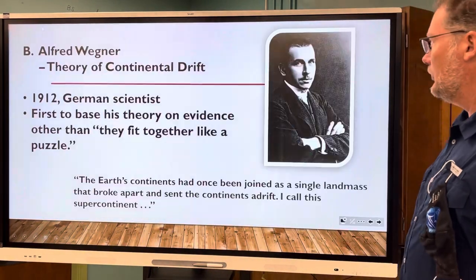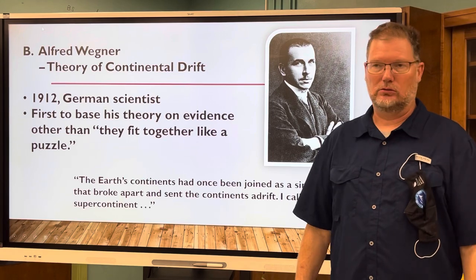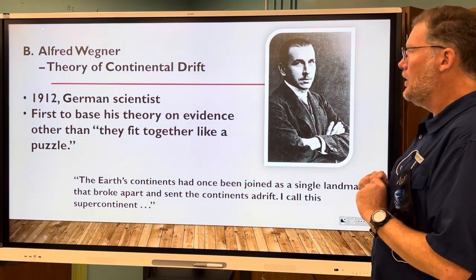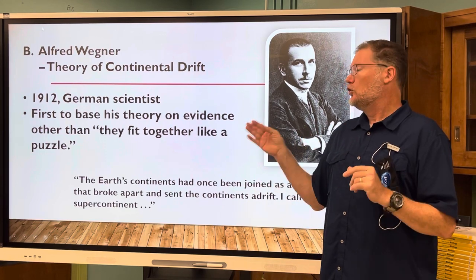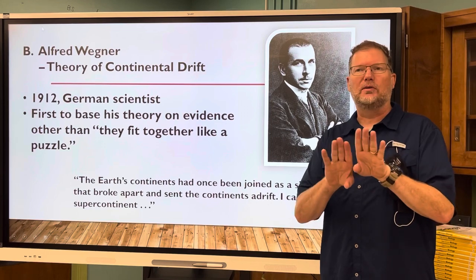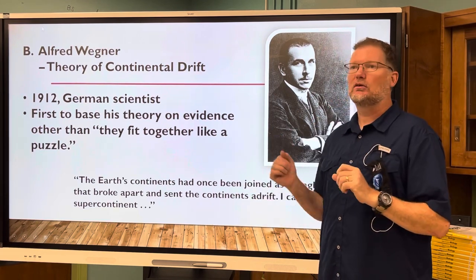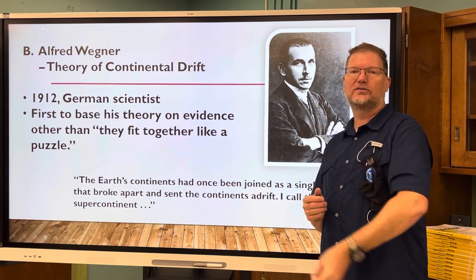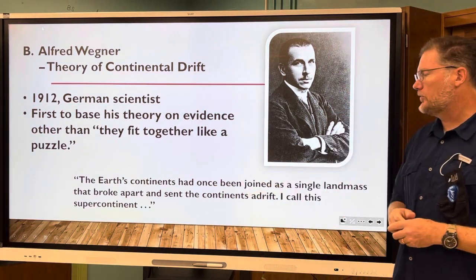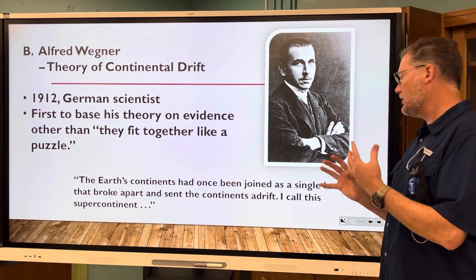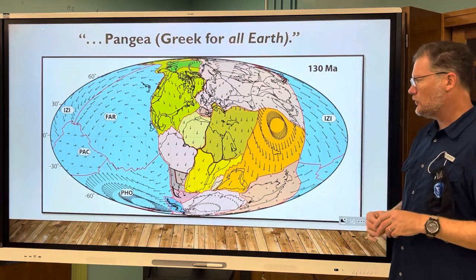Then about 400 years later, Alfred Wegener came along and proposed the theory of continental drift. He was the first to build a theory based on facts other than the puzzle pieces fitting together. His quote: 'The earth's continents had once been joined as a single landmass that broke apart and set the continents adrift.' He called that supercontinent Pangea — Greek for 'all earth.'